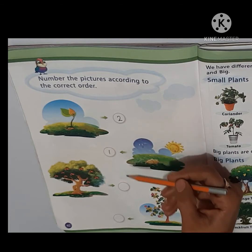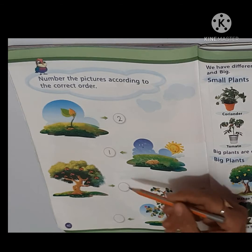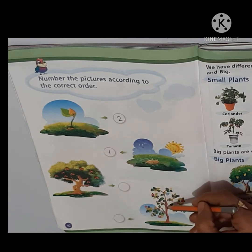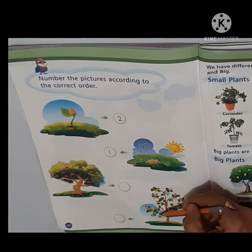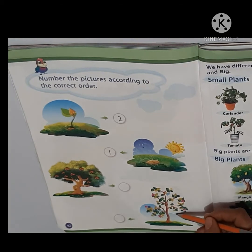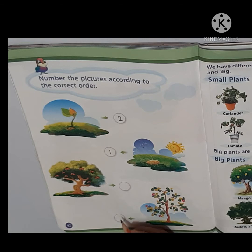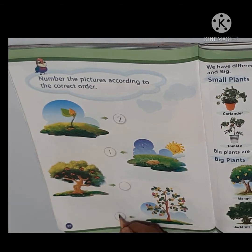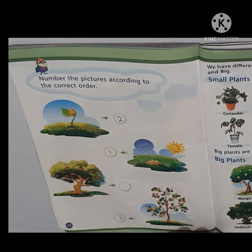After this, the next process: the baby plant will grow into a small plant. The small plant will grow, then flowers will grow. So we will put number 3 here.